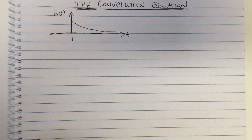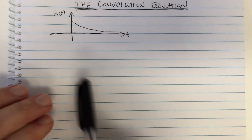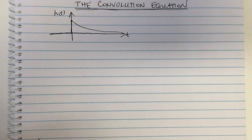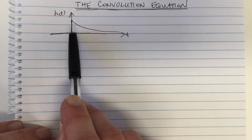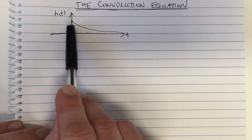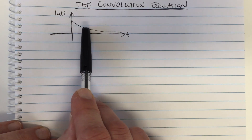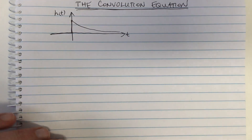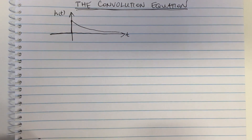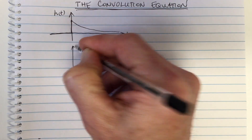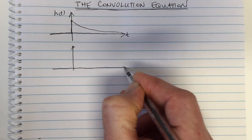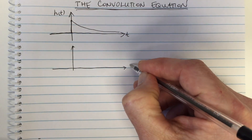I'm going to explain the convolution equation and use some figures to help with the explanation. Let's consider an impulse response of a system which looks like this — for example, a system where when it gets an impulse at time equals zero, the voltage goes up and then gradually dies away back to zero. You might think of many systems that have this kind of response. Let's think about what's going to happen at the output if we have more than one impulse.